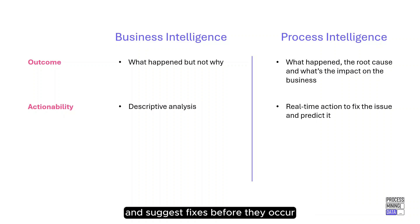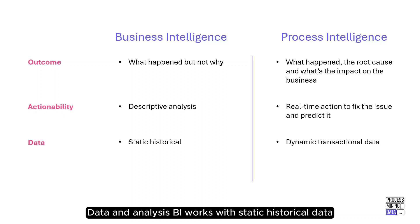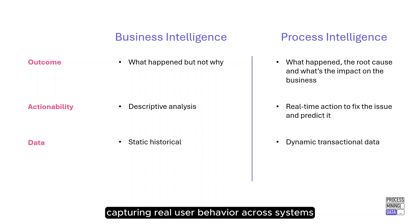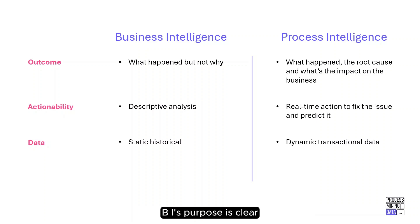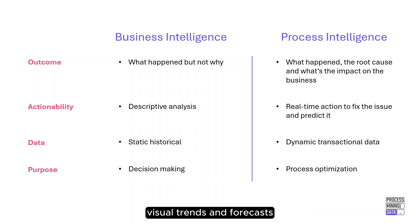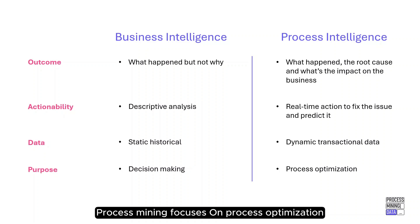Data and analysis: BI works with static historical data, while process mining works with dynamic, time-stamped event logs capturing real user behavior across systems. With task mining, it gives you complete traceability. BI's purpose is clear — help leaders make decisions using performance metrics, visual trends, and forecasts. Process mining focuses on process optimization.